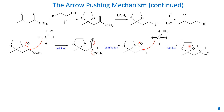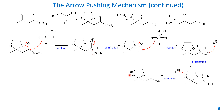The last step involves protonation of the alkoxide and hydrolysis of the cyclic acetal. First, we protonate the alkoxide to form the alcohol. Then we protonate one oxygen of the cyclic acetal to form a positively charged intermediate. That oxygen then kicks off the better leaving group by pushing its lone pair to form a pi bond and break the carbon-oxygen bond — an elimination step.